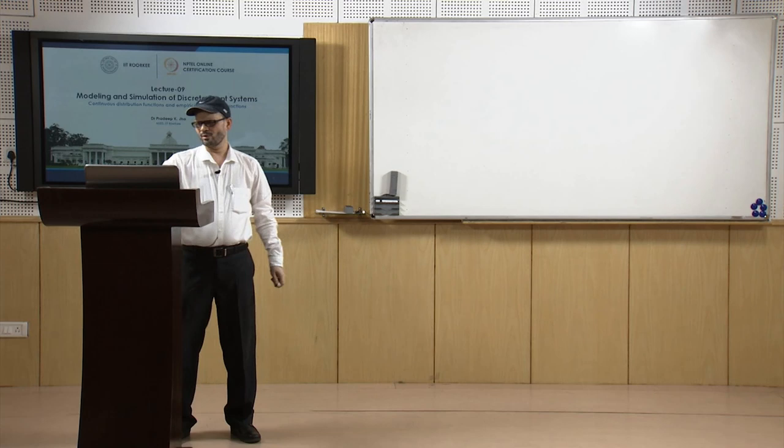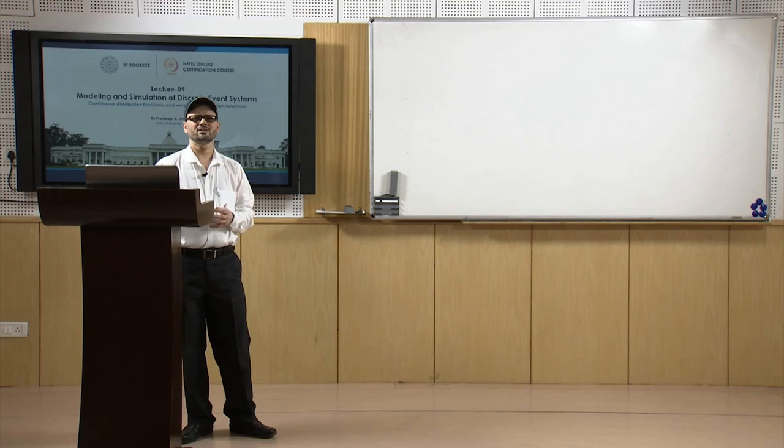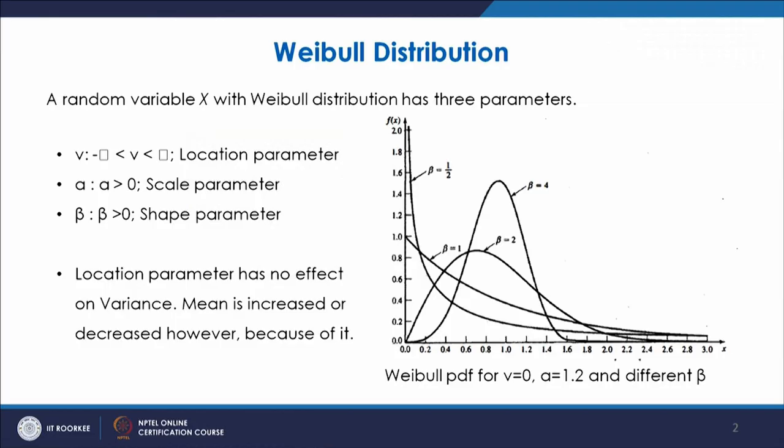The first distribution function we will discuss is the Weibull distribution function. In the Weibull distribution, the random variable x follows the Weibull distribution and has three parameters: one is the location parameter, one is the scale parameter, and another is the shape parameter.